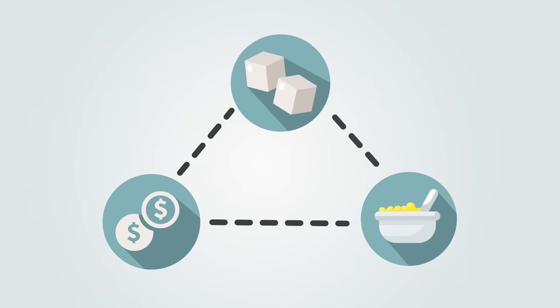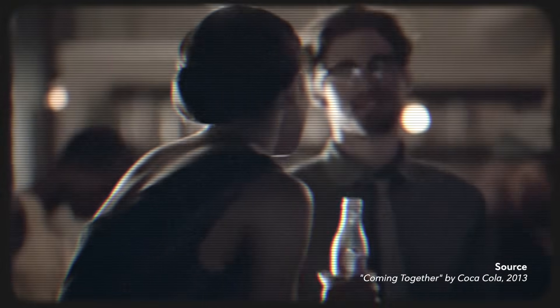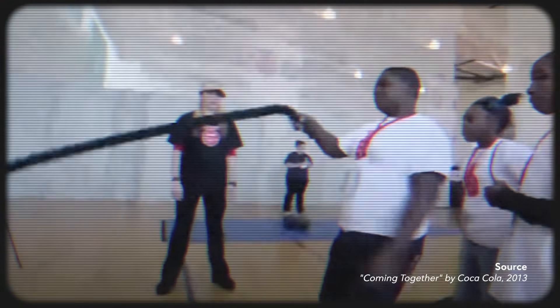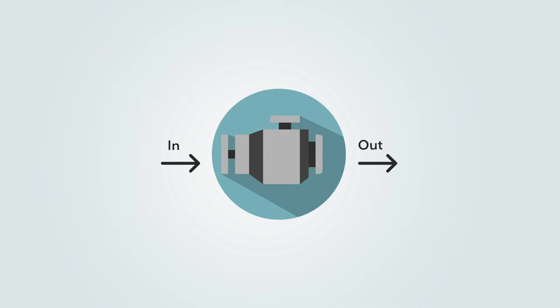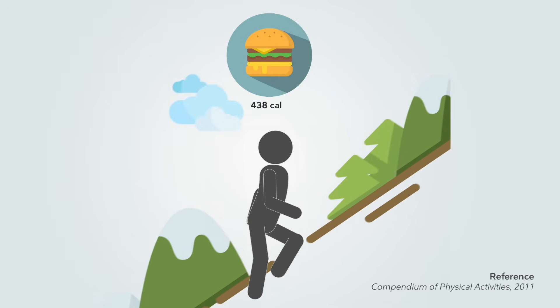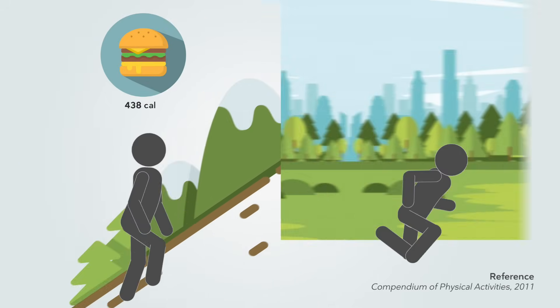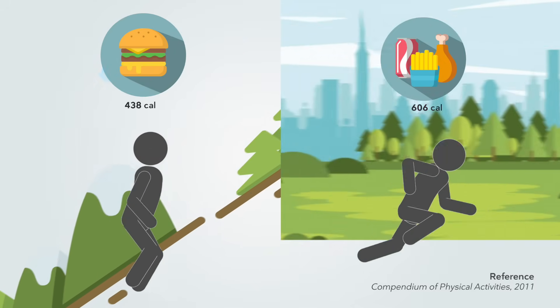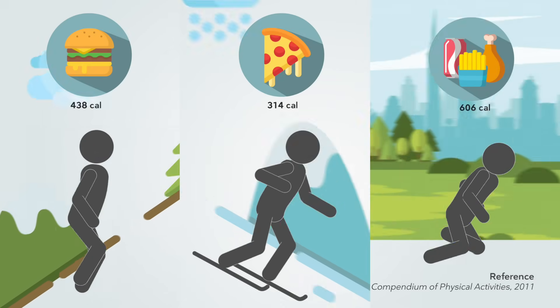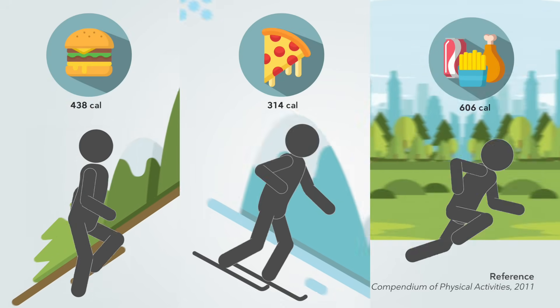This corporate strategy has been around for a long time — the idea that all calories count, no matter where they come from, including Coca-Cola. And if you eat and drink more calories than you burn off, you'll gain weight. If we follow this calories-in-calories-out analogy, we find that it actually takes a full hour of intensive hiking to burn off a double cheeseburger, and an hour of running to burn off fast food fried chicken with soda.